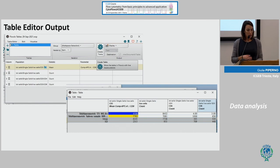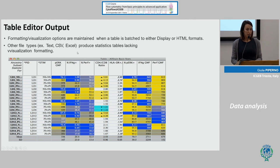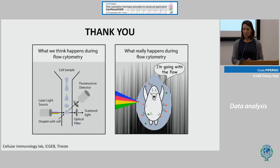This is an example of how you can use FlowJo to analyze very complex samples with many markers and perform statistics with many parameters. After finishing in Table Editor, you can export the data as Excel — but remember that formatting will be lost and you will need to reformat in Excel. To conclude, flow cytometry generates a lot of data and it is very important to learn how to analyze it carefully. Thank you, and I'm here for questions.